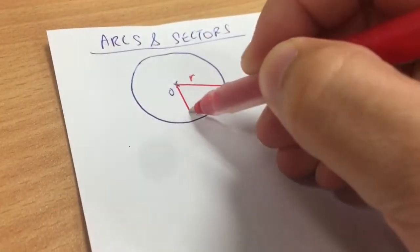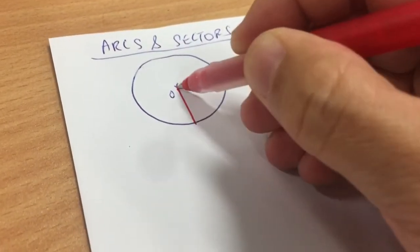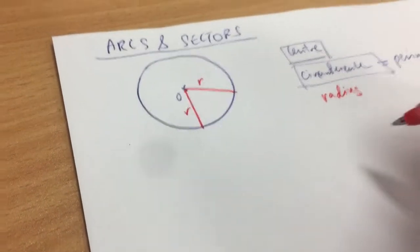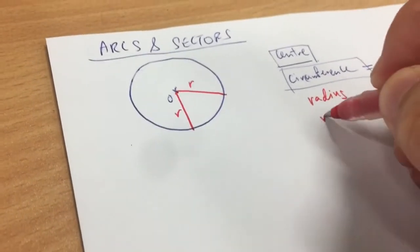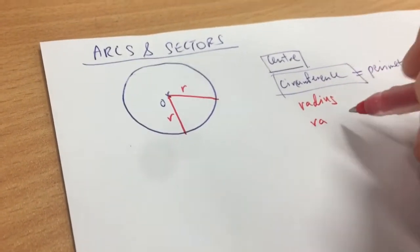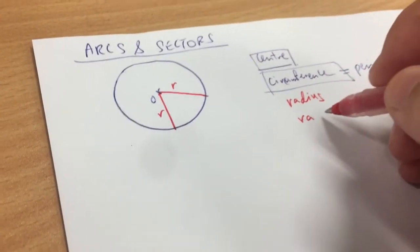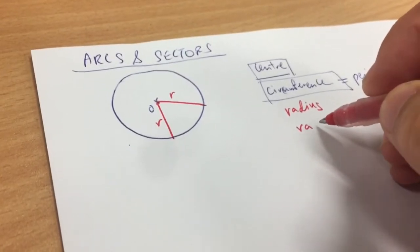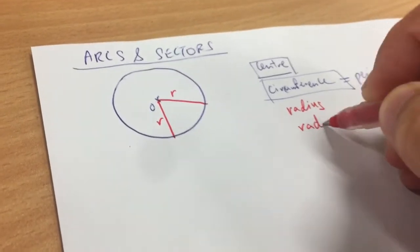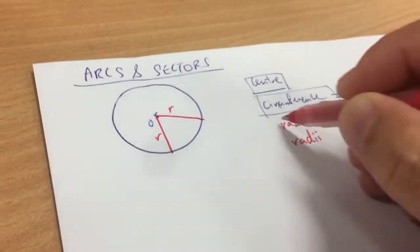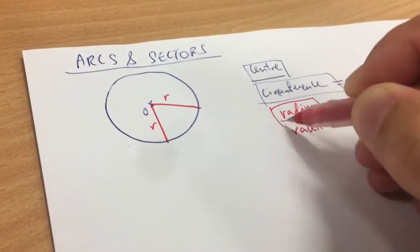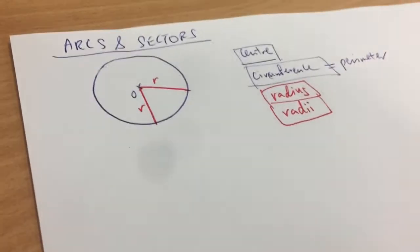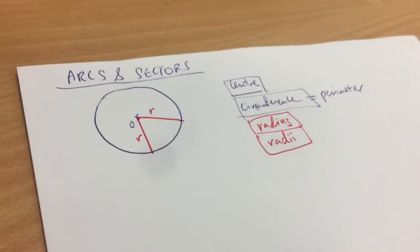I share with the girls that if you have two radii — the plural of radius is what? Some of the girls say 'radius,' but it's not 'radius.' It's actually 'radii.' So one is called radius, two is called radii.